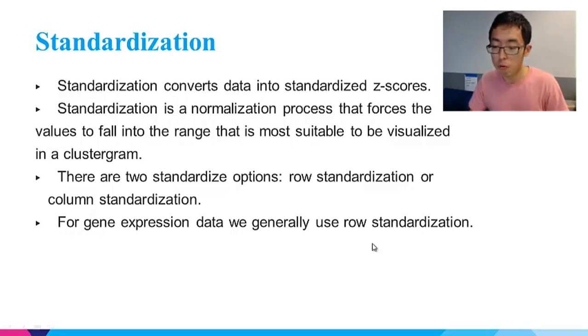There are two options: row standardization and column standardization. Row standardization calculates z-scores for each row, and column standardization calculates z-scores for each column. For gene-expression data, we generally use row standardization because we want to see for each gene how their expression values change across different conditions.